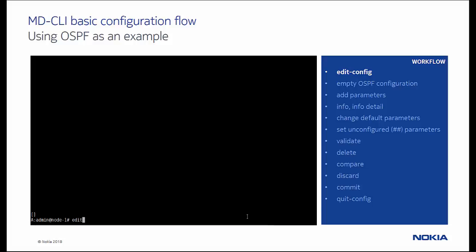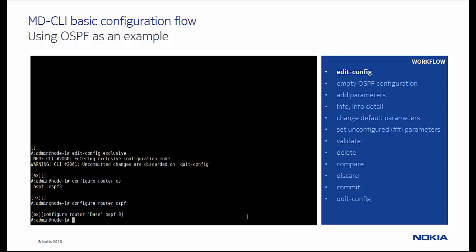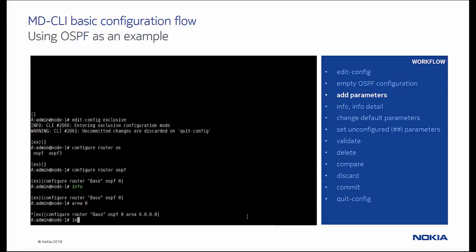When we enter exclusive configuration mode and navigate to the OSPF branch, we see with the info command that the OSPF configuration is empty. So let's add two interfaces in the backbone area, and we can use the info command to see the candidate configuration when we are done.